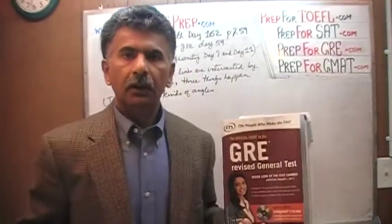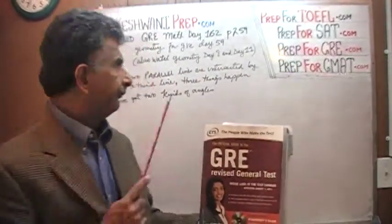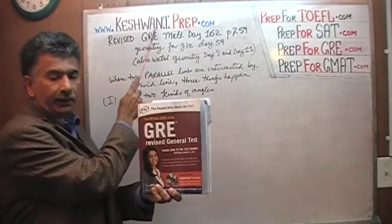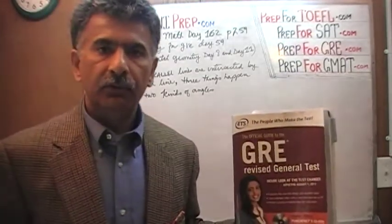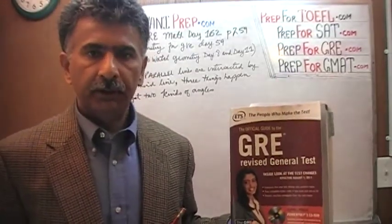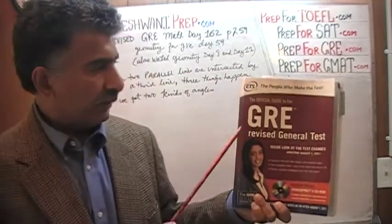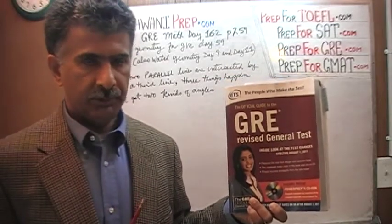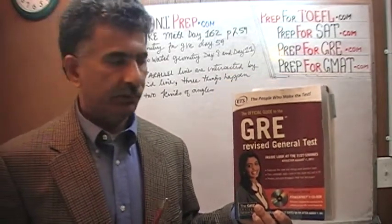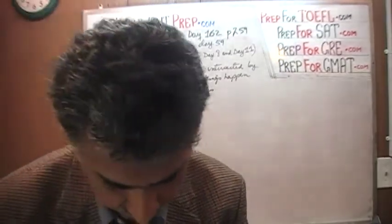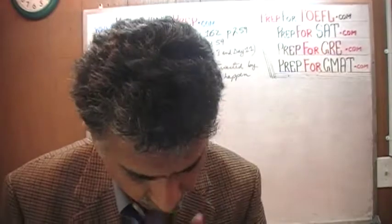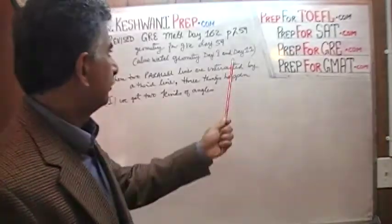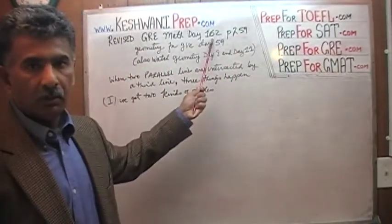Hello. My name is Keshwani — that's K-E-S-H-W-A-N-I. We are here because we want to prepare for the GRE. We have been solving GRE math problems out of this book, the Official Guide to the GRE Revised General Test. If you do not own this book already, purchase one immediately. You are going to need it. The problem we are about to solve is on page 259, and today is lesson number 162.